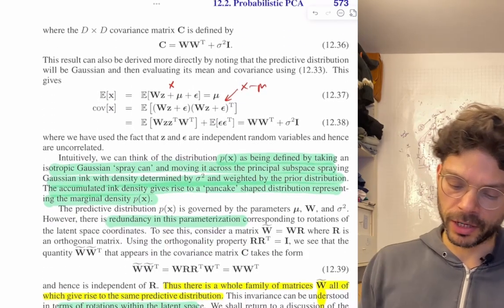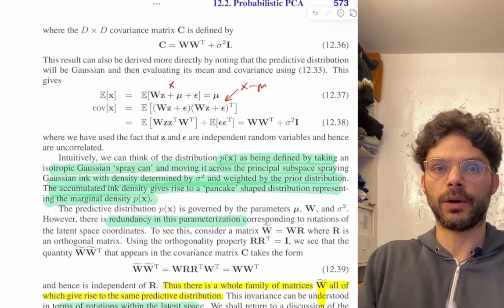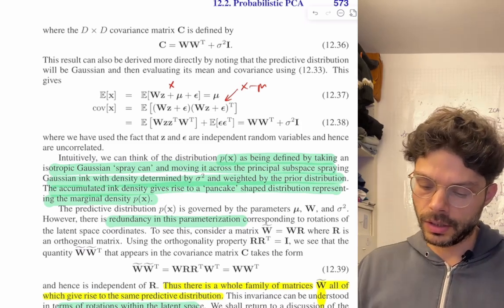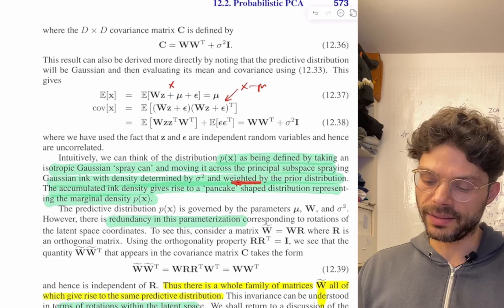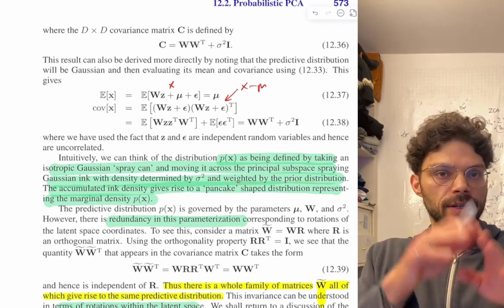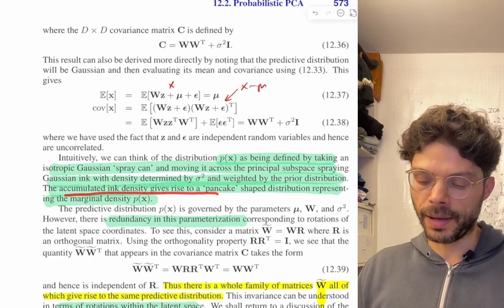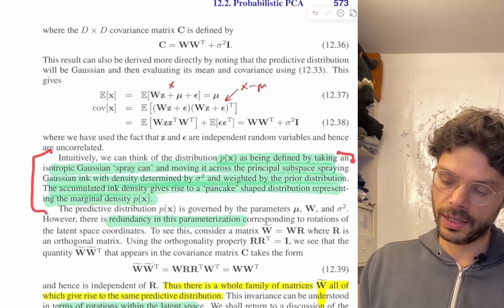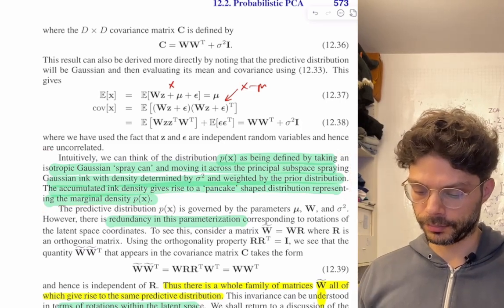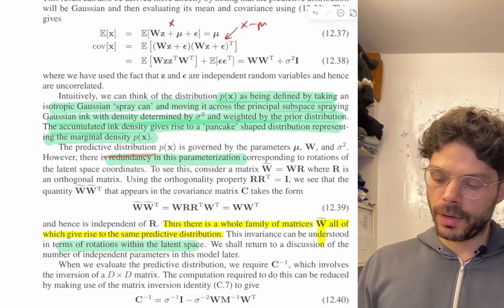The intuitive picture: think of p(x) as being defined by taking an isotropic Gaussian spray can — those were the red circles — and moving it across the principal subspace, spraying Gaussian ink with density determined by sigma squared and weighted by the prior distribution p(z). The accumulated ink density gives rise to a pancake-shaped distribution representing the marginal density p(x). The predictive distribution is governed by the parameters mu, W, and sigma squared.